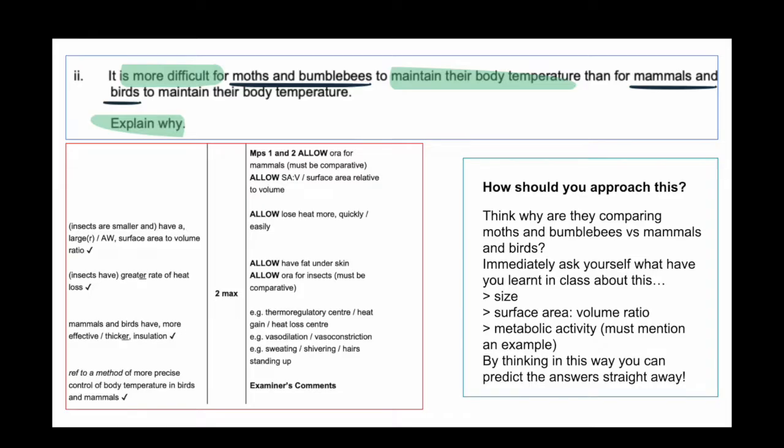Another thing would be that mammals and birds have thicker insulation. That's true, isn't it? Because you're not going to see a moth having thicker insulation than a bird. That adds to it. The question is all about body temperature, so what controls body temperature? That's how you answer that question.